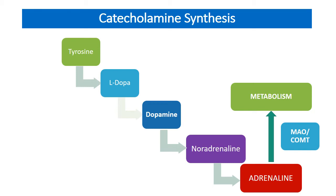Let us discuss about catecholamine synthesis. Tyrosine is an amino acid obtained from food and tyrosine-rich fruits. Tyrosine is converted into L-Dopa (Levodopa), and then Levodopa is converted into dopamine by the enzyme dopa decarboxylase. Dopamine is a catecholamine neurotransmitter. It further gets converted into noradrenaline, and noradrenaline is converted into adrenaline, which is then released at its nerve ending.